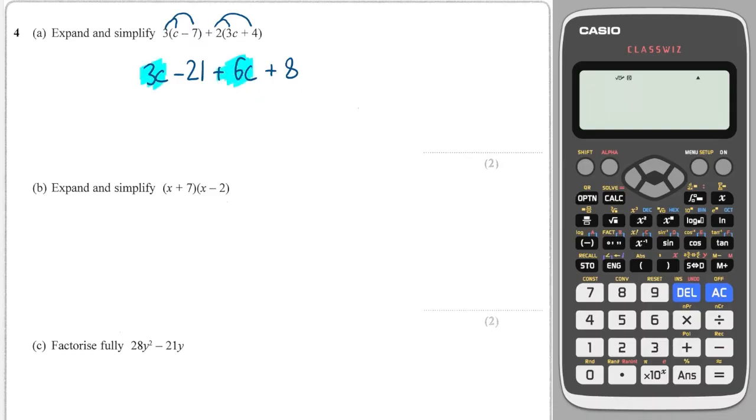I'm then going to simplify, so I'm going to look at the like terms. How many c's do we have here? We've got 3 plus 6, that's 9c. And then what about the constant values or the numbers? We have minus 21 plus 8, which is minus 13.